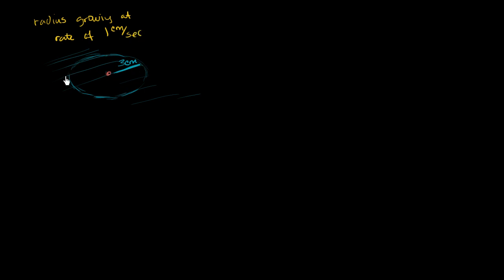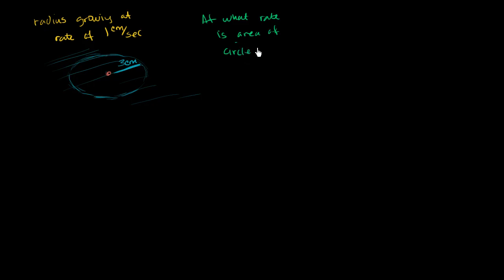So given this, right now our ripple circle has a radius of 3 centimeters, and the radius is growing at 1 centimeter per second. Given that, at what rate is the area of the circle growing?